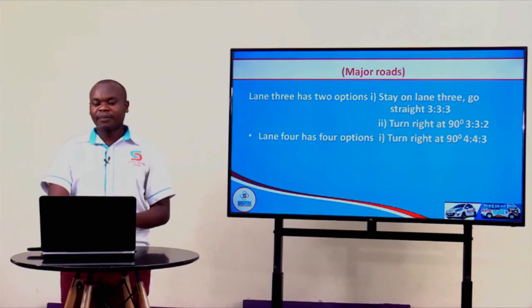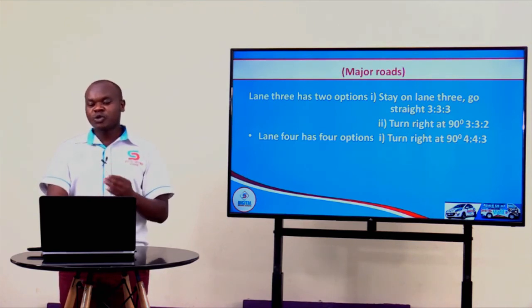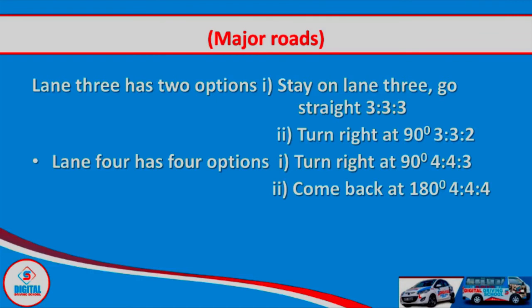The second option of lane four is to come back at 180 degrees — you go forward, do a 180-degree turn, and go back to where you came from. Here we see 4-4-4: we are in lane four, a major road, and after the 180 degrees turn you exit to a major road.